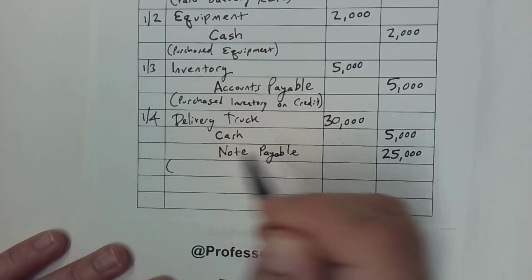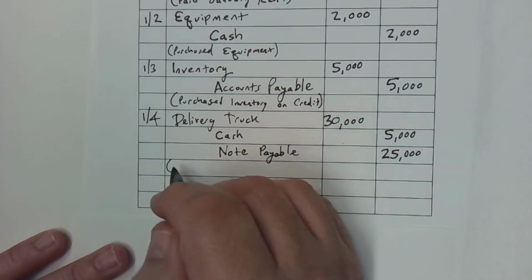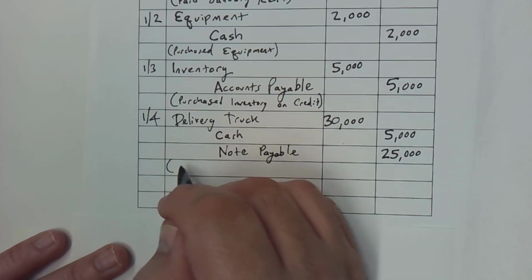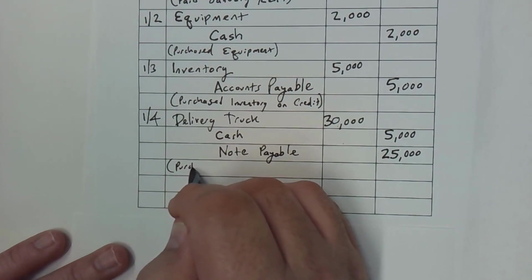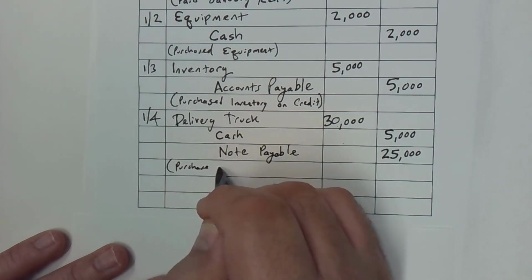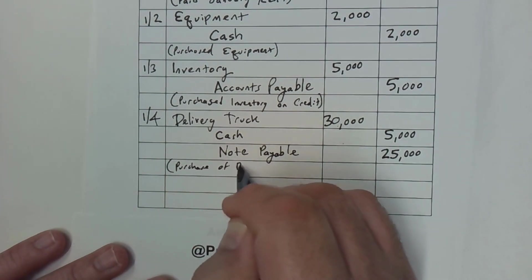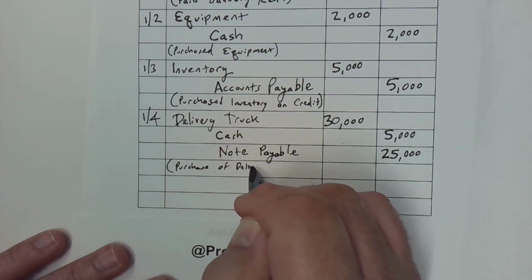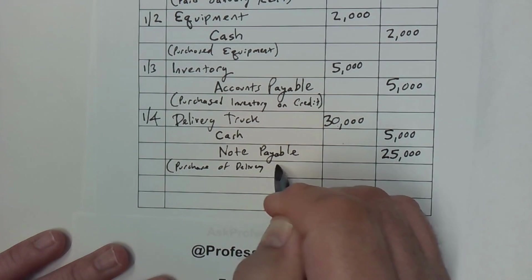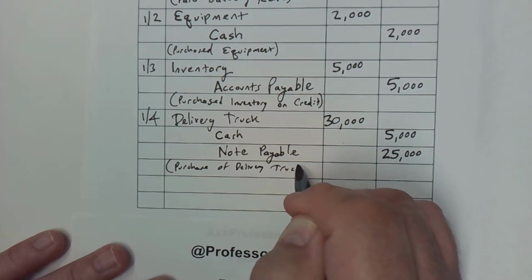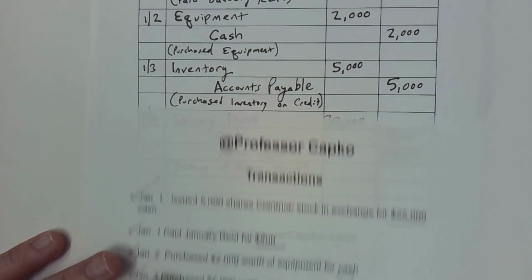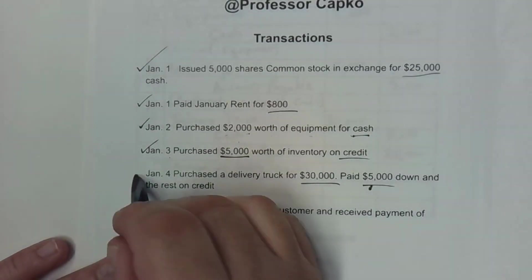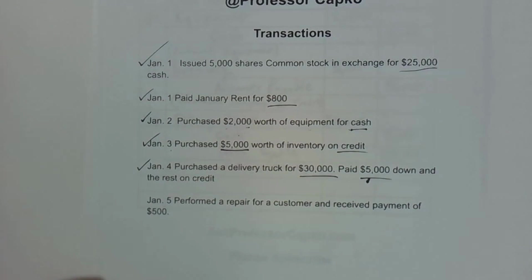We'll put a description here — 'purchase of delivery truck.' And we have one last transaction. I can check that one off.